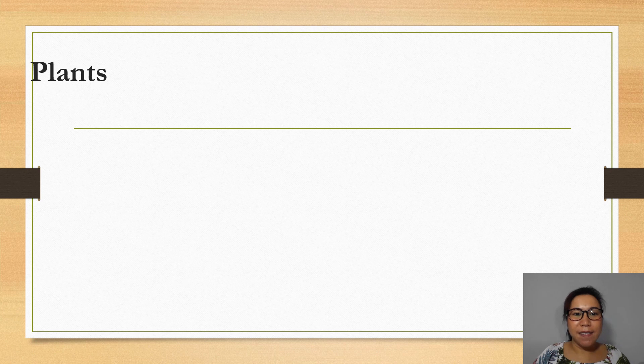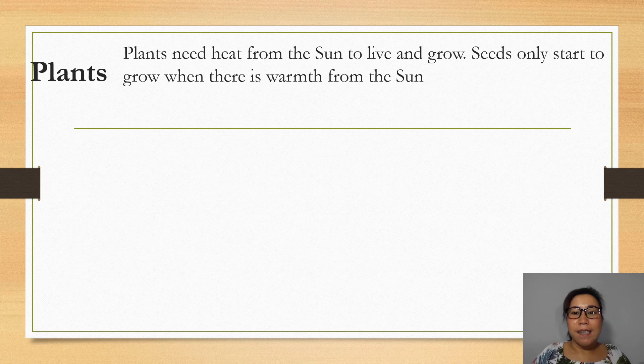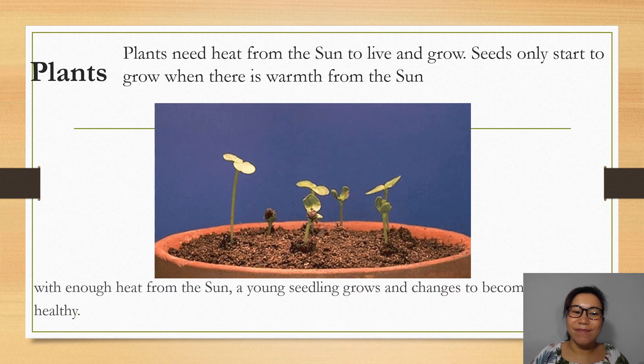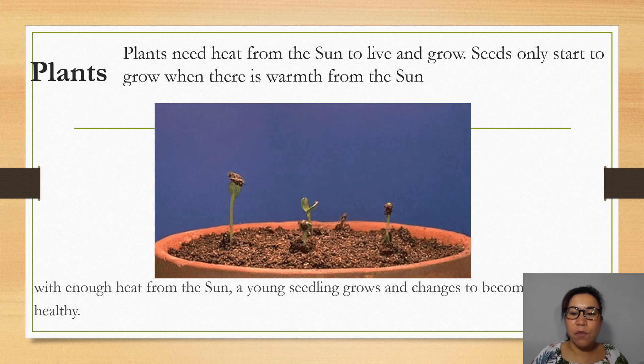For the plants. Plants need heat from the sun to live and grow. Seeds only start to grow when there is warmth from the sun. With enough heat from the sun, a young seedling grows and changes to become strong and healthy.